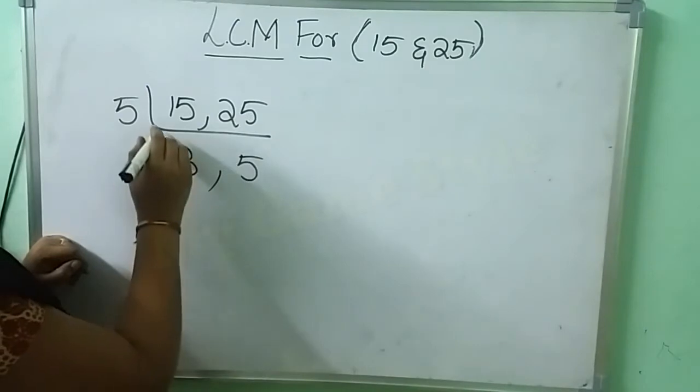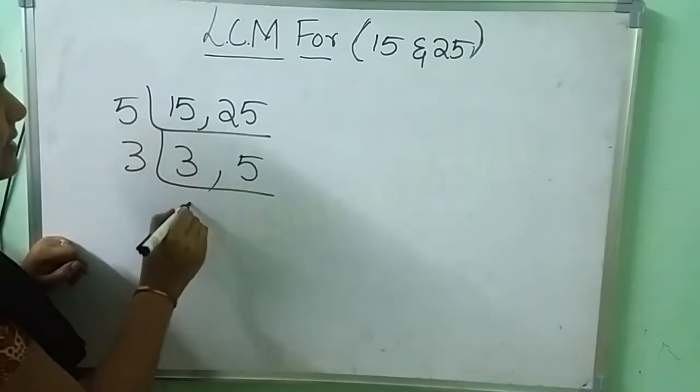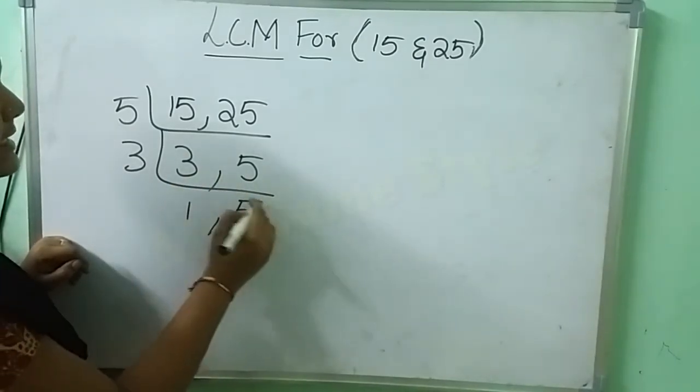5 times 5 is 25. Then I am taking 3 table. 3 times 1 is 3. 3 times 1 is 3. This 5 has it is.